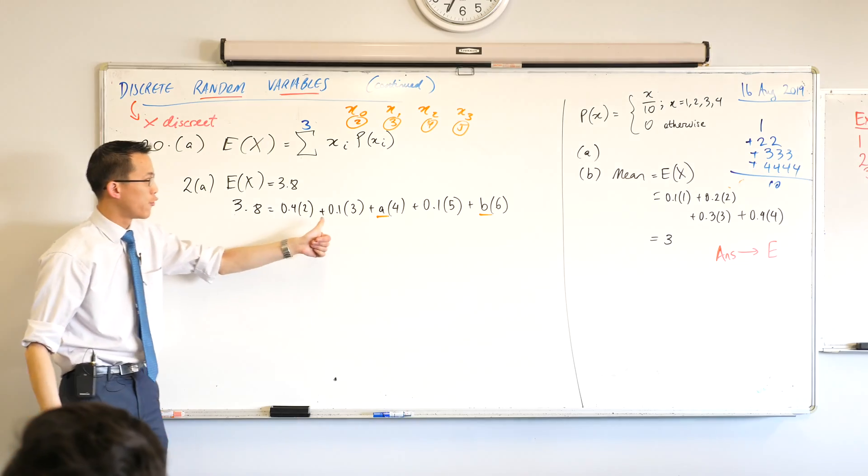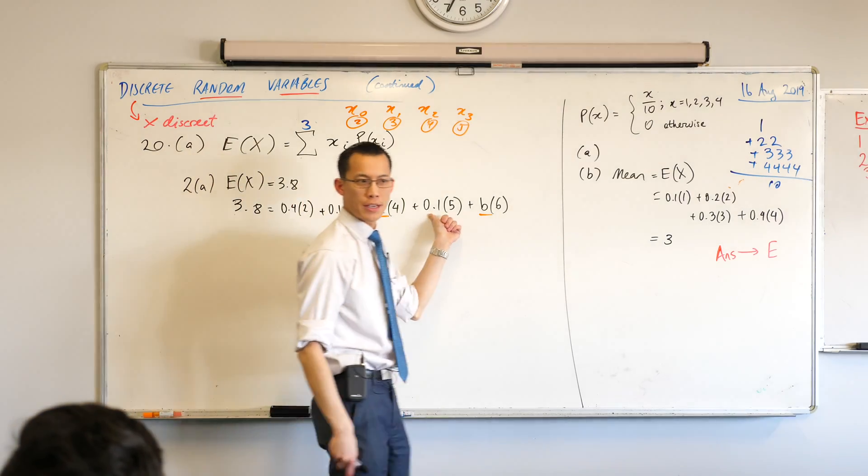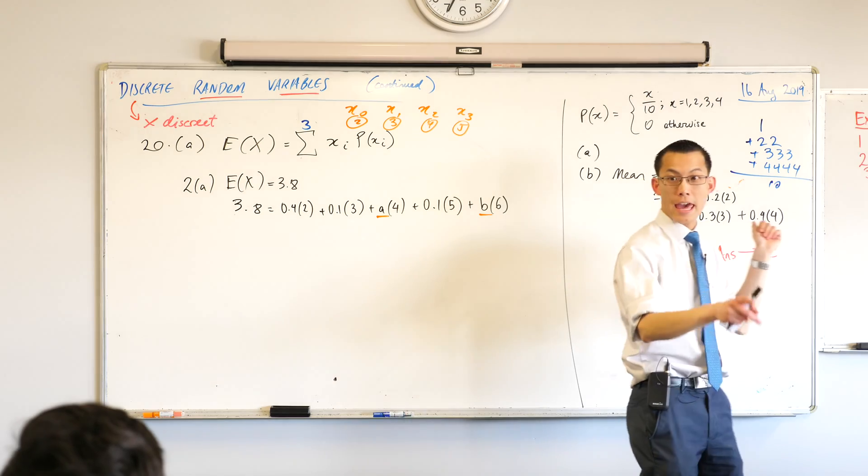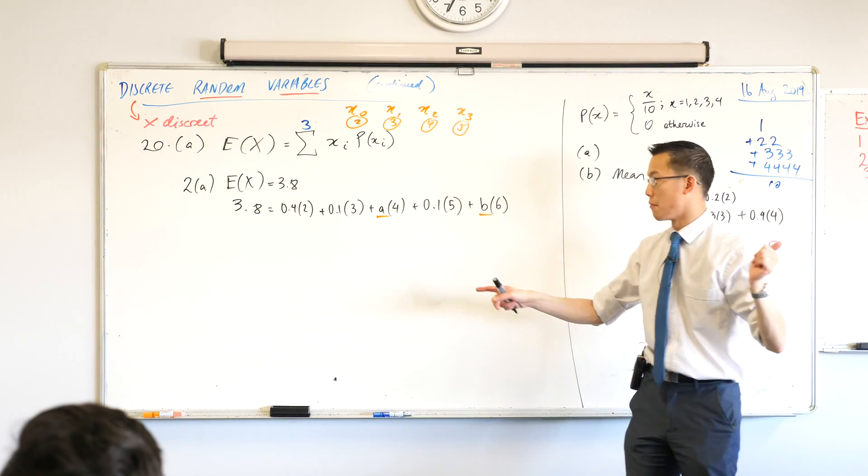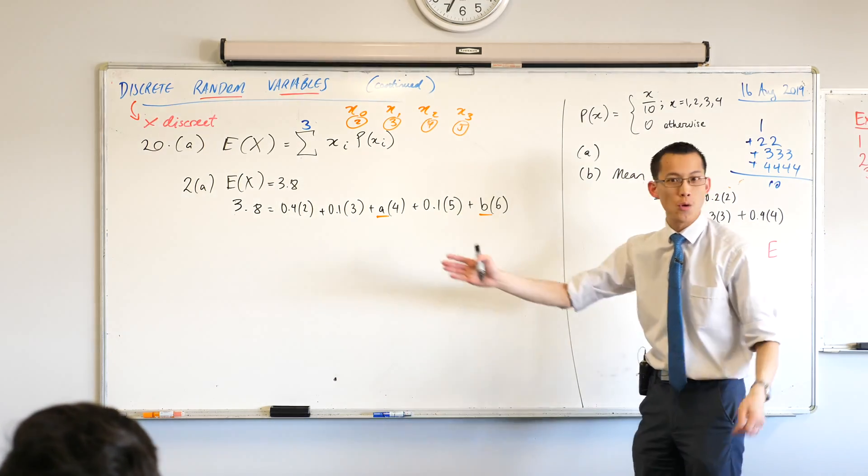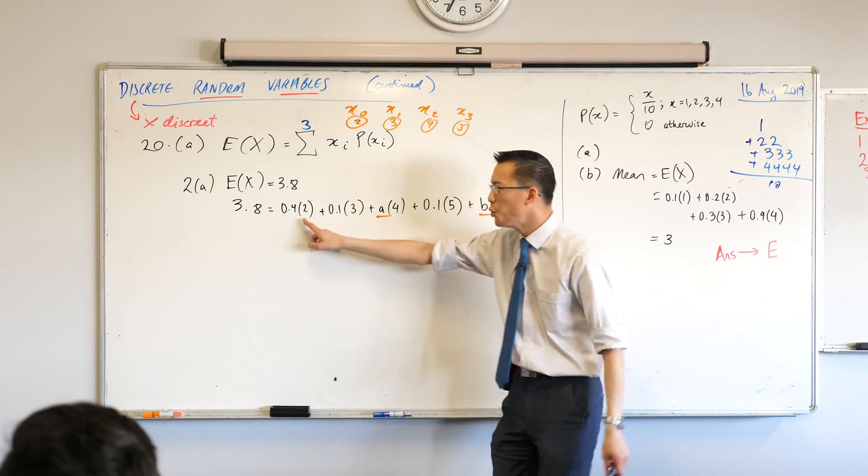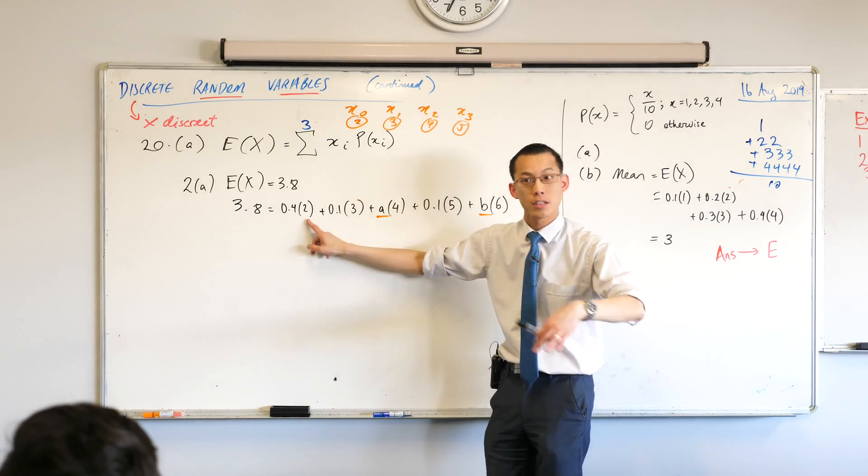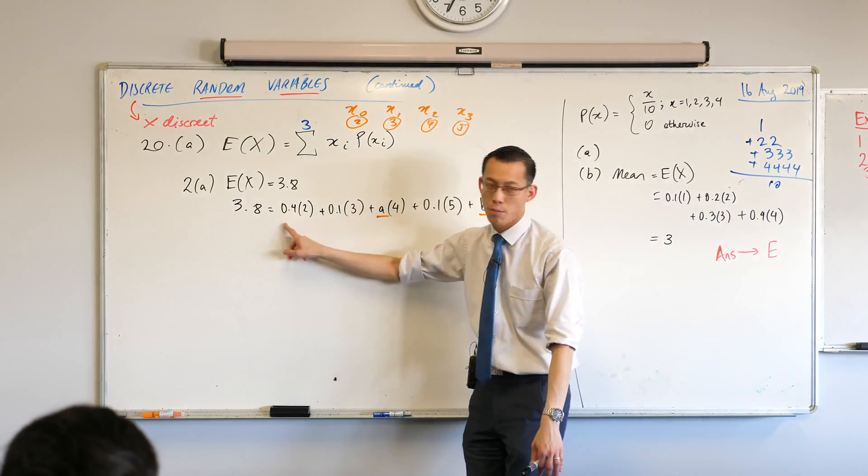So, there's another equation we need to form that connects A and B. Have a look at the way that I've written it. See my 0.4, my 0.1, this 0.1. What are they? What do they represent? They're going to be probabilities, aren't they? When you're working out expected value, like two is not a probability. It's one of the discrete random variables. The 0.4 is the probability.